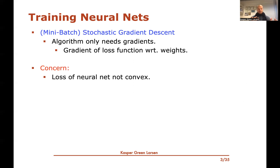The nice thing about mini-batch stochastic gradient descent is that the algorithm is basically a template that works for almost all kinds of training problems where you want to minimize the loss function. The only thing you need to be able to do is compute the gradient of the loss function with respect to some trainable parameters or weights. For linear and logistic regression, these loss functions turn out to be convex functions, which means there is only one local minimum — the global minimum — so gradient descent always walks towards this global minimum, minimizing the loss function.